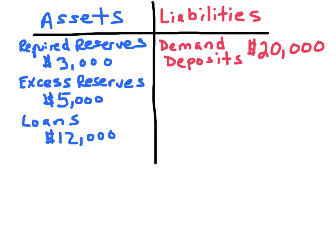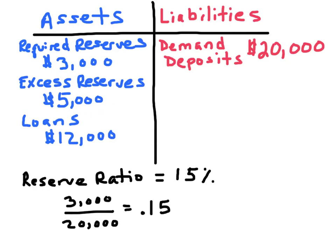What is the reserve requirement? The Fed establishes a certain percentage of checkable deposits which the bank must hold on to. In this case, the reserve requirement set by the Fed is 15%. It's 15% because $3,000 divided by $20,000 in checkable deposits works out to be 0.15, or 15%. So whenever you deposit money into this bank, they have to hold on to at least 15%. The rest can be lent out.